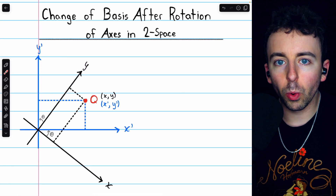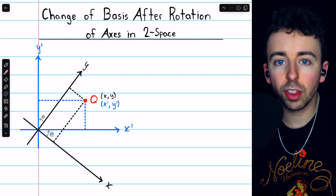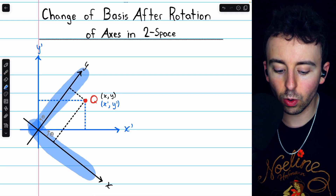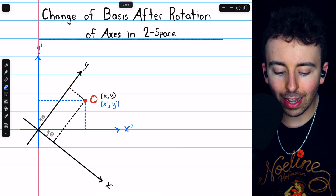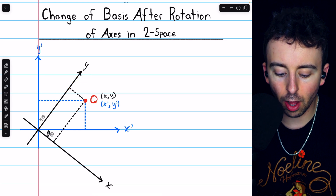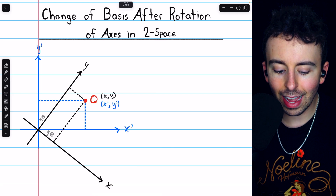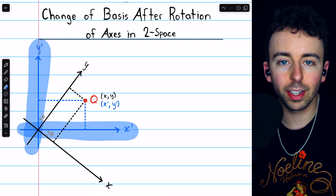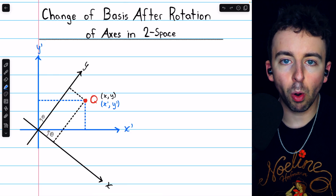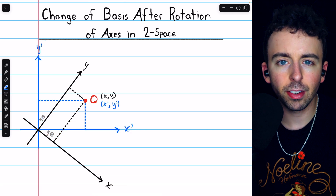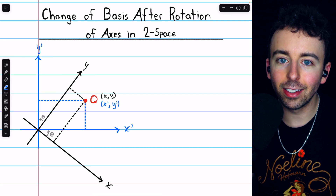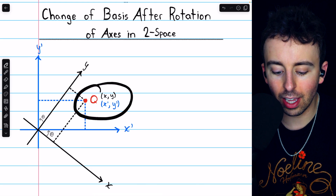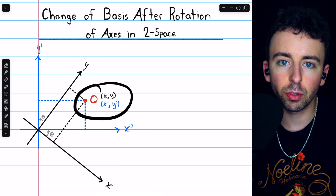Let's explore what that orthogonal transition matrix would be with the help of a picture. Here we have an x-y coordinate system, and you can imagine we rotate it counterclockwise through an angle theta. That gives us this new x'-y' coordinate system. Keep in mind, we're not rotating the points or the vectors in the space — we're just rotating the axes. So we might ask how do we express, for example, this point Q in terms of the new rotated basis vectors?